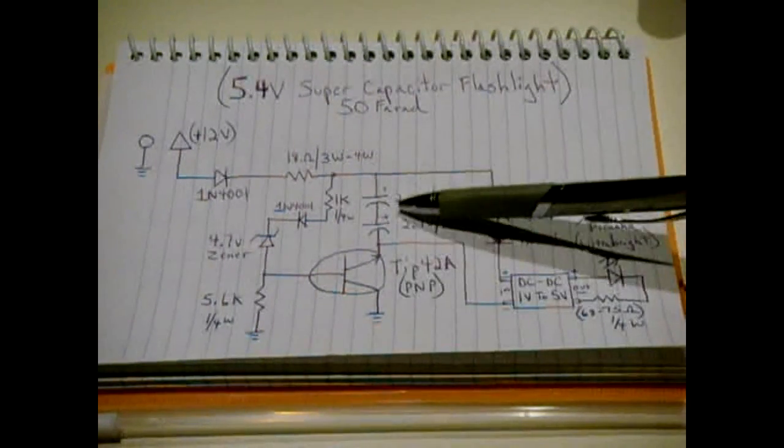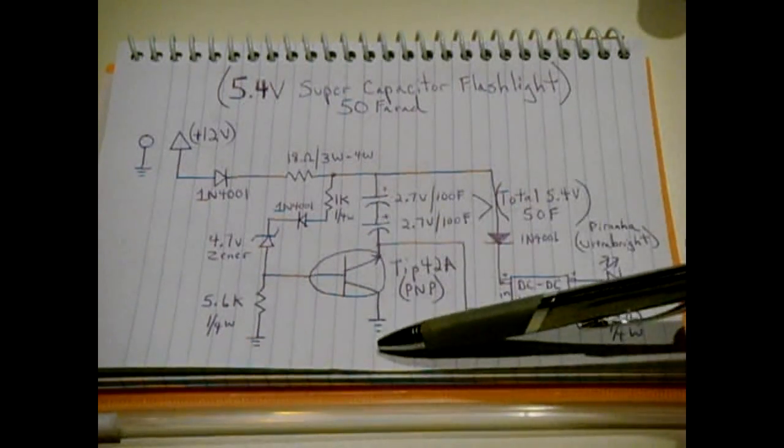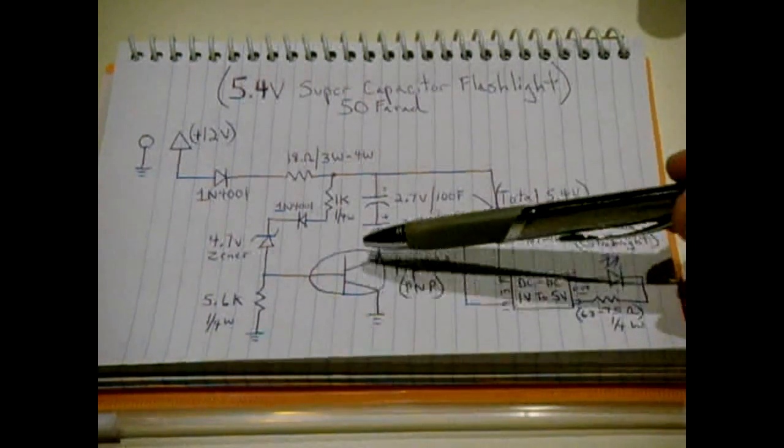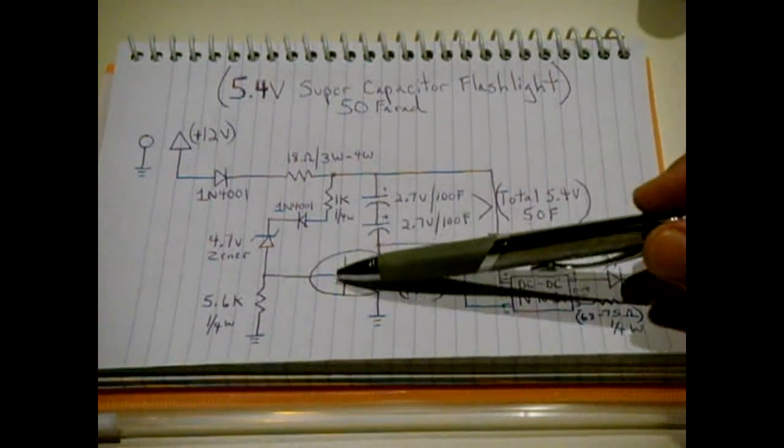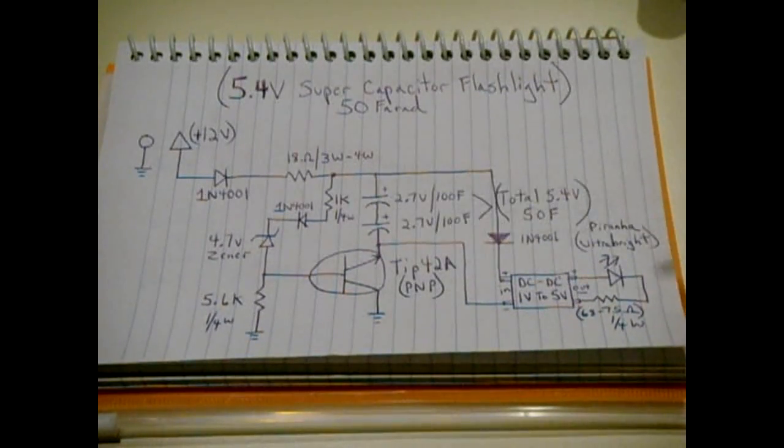You'll notice that I have the capacitors placed on the emitter side instead of the collector side. If I put the capacitors on the collector side, I notice that the transistor runs much hotter. So there's a reason why I did this, and I suggest you follow the way I did it here.